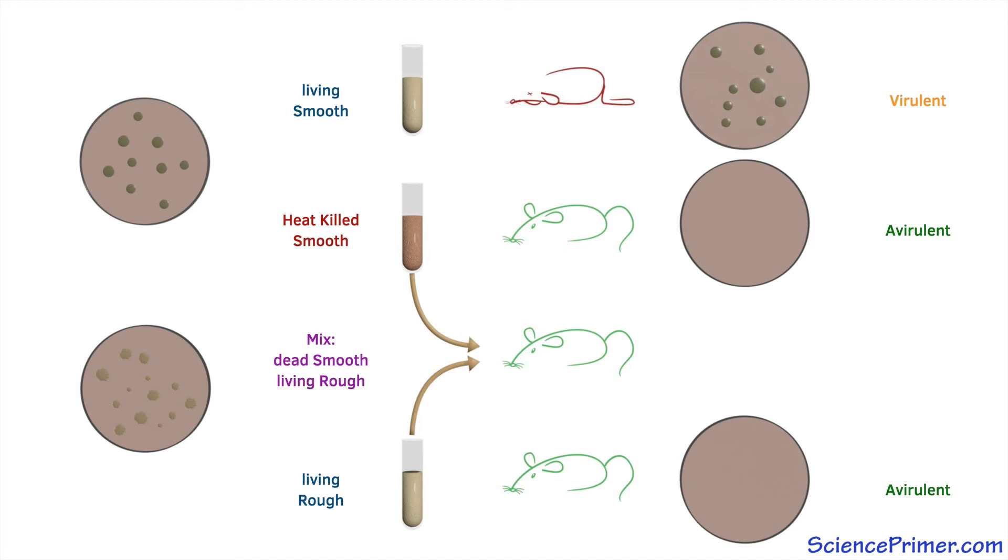This is the experiment that led him to discover transformation, because he found that mixing living avirulent cells from one type of pneumococcus with dead cell debris from a virulent strain of a different type did cause disease in the exposed mice.